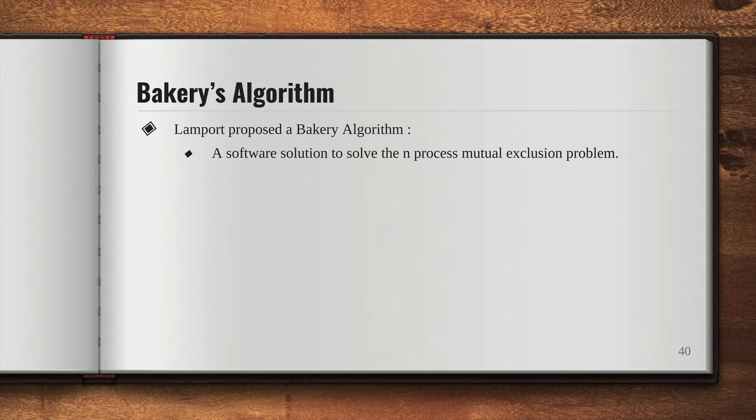In the previous video we discussed that there is a critical section problem that we need to solve, and there are different ways of solving it. There are different algorithms to solve it, one of which is Bakery's algorithm.